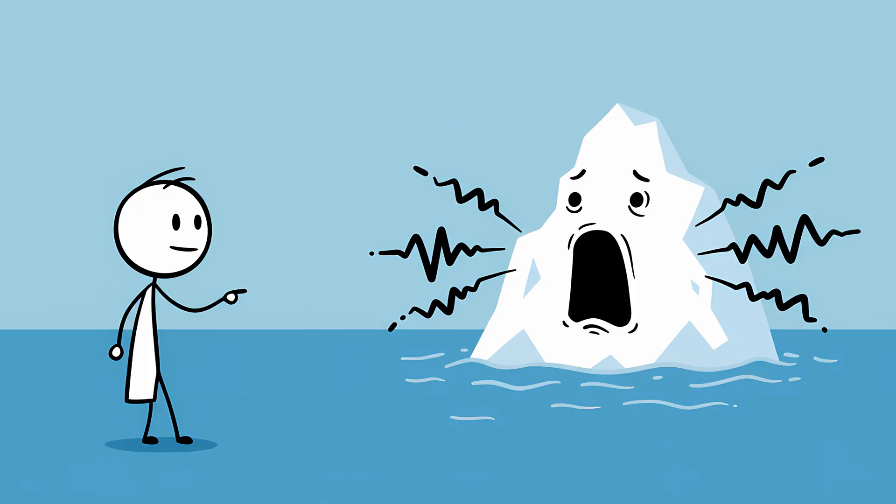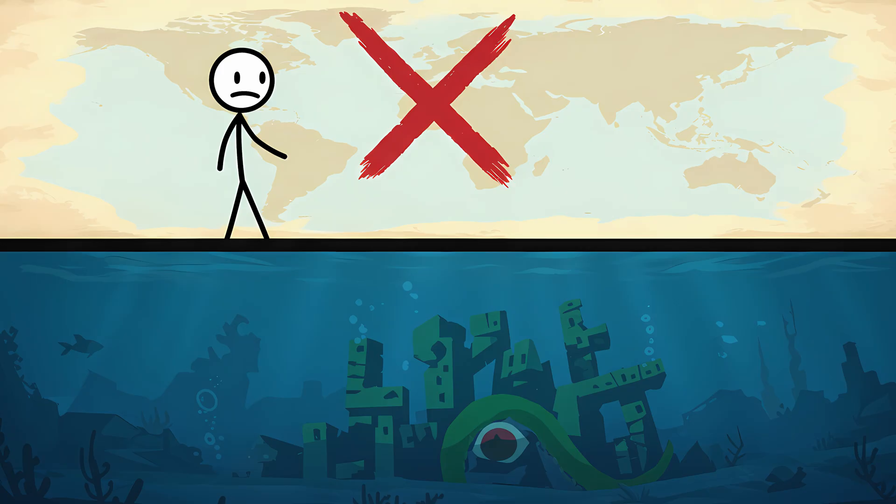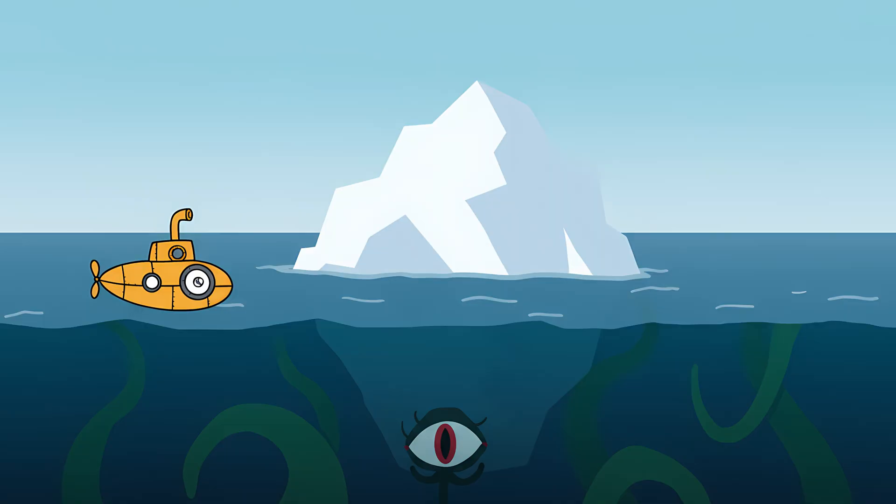Of course, scientists later tried to calm everyone down by saying it was probably just icebergs cracking apart. Yeah, sure. A little ice cube just casually howled louder than any creature on Earth. Totally normal. But here's where it gets spooky. The Bloop's coordinates? Almost the exact same spot where author H.P. Lovecraft once described the underwater city of R'lyeh, the supposed resting place of Cthulhu. So either we picked up an iceberg, or something the Navy really doesn't want us to meet.